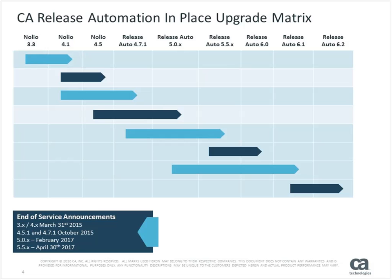As we go through the deck, we're going to start with an overview of the products. Here's a timeline of Release Automation going back to Nolio — Nolio 3.3 at the left all the way through to Release Automation 6.2 on the right. Release Automation 6.2 is currently in customer validation in beta mode and will be released towards the end of July.